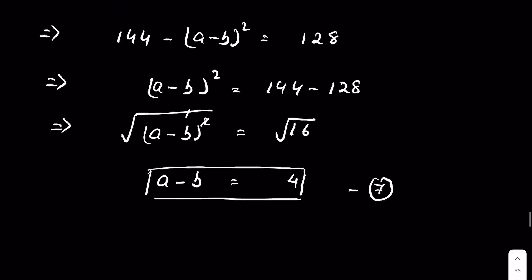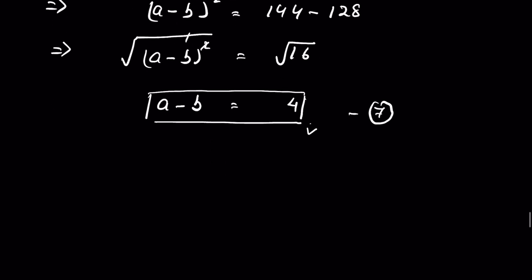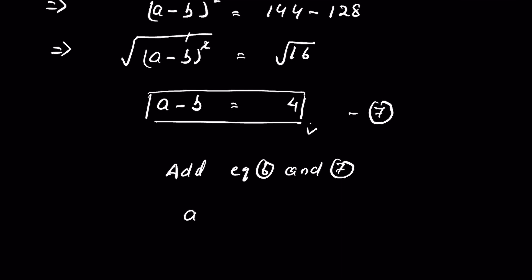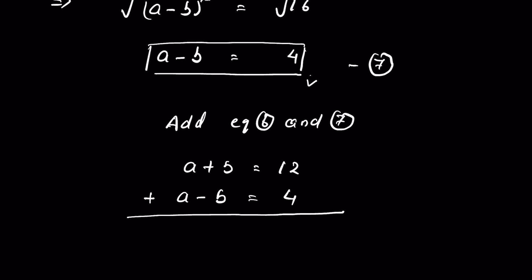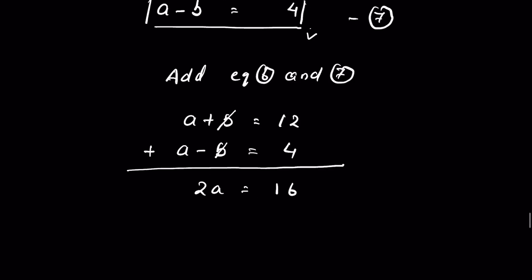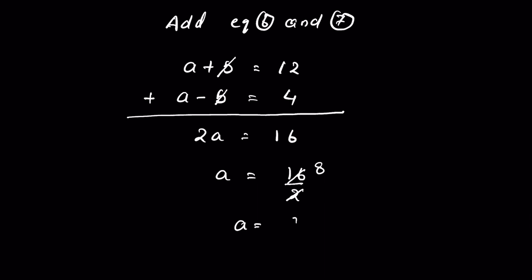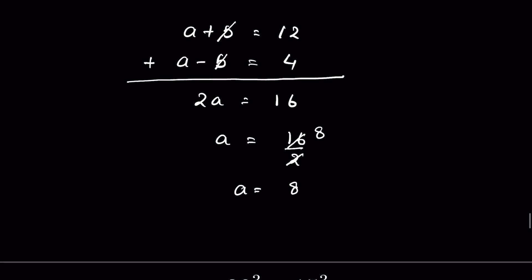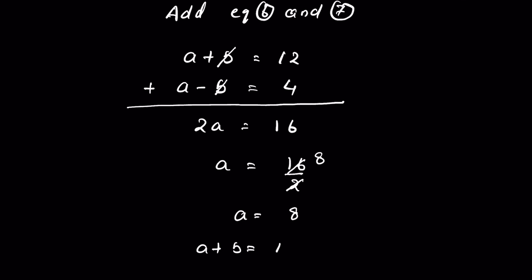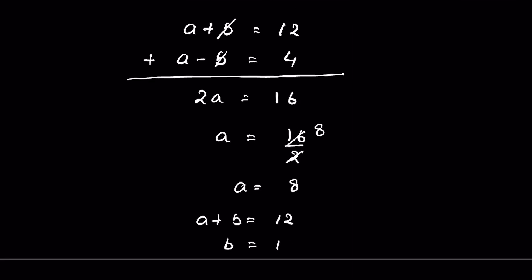We now have a+b equals 12 from equation 6, and a-b equals 4 from equation 7. Adding these two equations: 2a equals 16, so a equals 8. Substituting back, b equals 12 minus 8 equals 4.